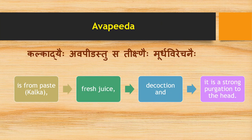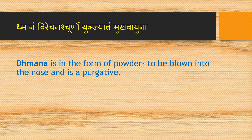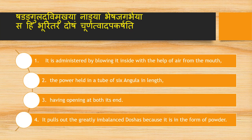Avapira Nasya is prepared from paste (Kalka), fresh juice, or decoction, and is a strong purgation to the head. Dmanam is in the form of powder blown into the nose and is a purgative (Virejana). It is administered by blowing through a tube of six angulas in length with openings at both ends, using air from the mouth. It pulls out the greatly vitiated doshas because it is in powder form.